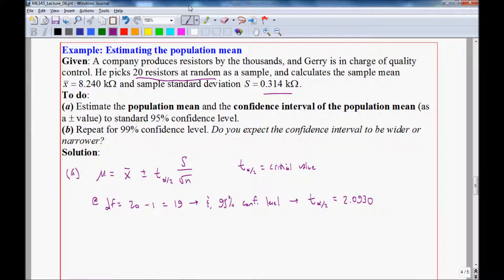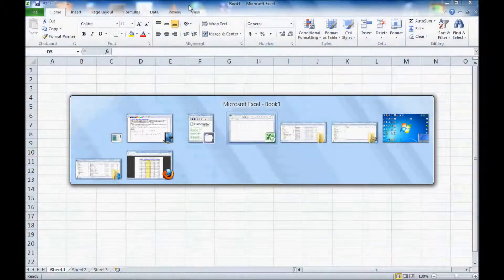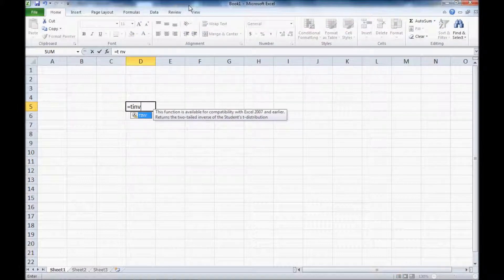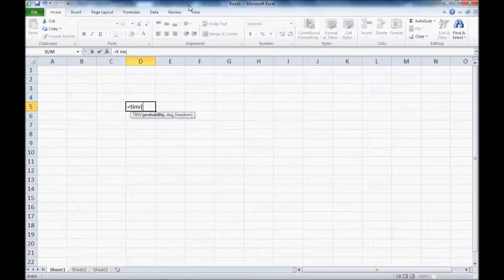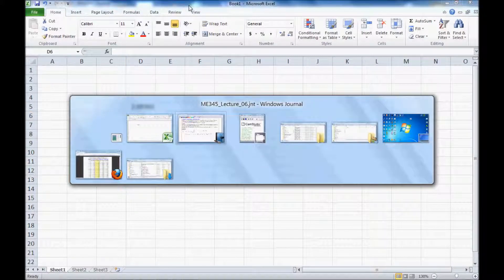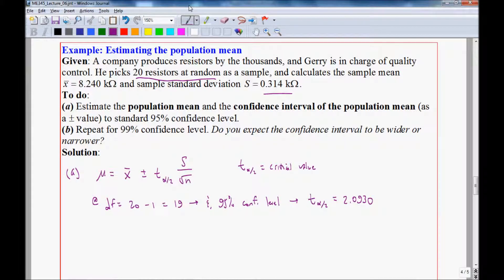I point out that we can also do this in Excel. If we open Excel and we type in equal TINV in parentheses, you'll see that Excel asks you for the probability. In this case, for 95% confidence, the probability is 0.05, 5%. And then the number of degrees of freedom is 19. End parentheses and hit enter. And it gives you 2.09302, which is exactly what we got from the table to this proper number of significant digits.